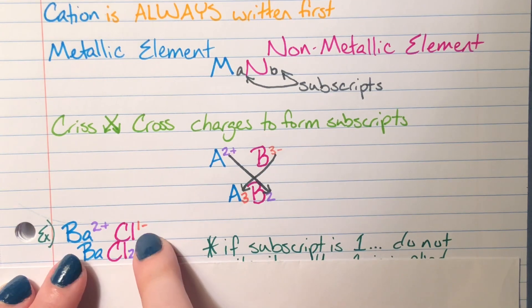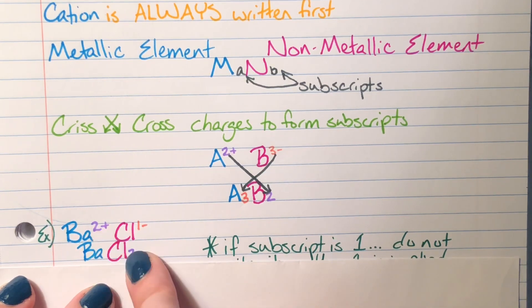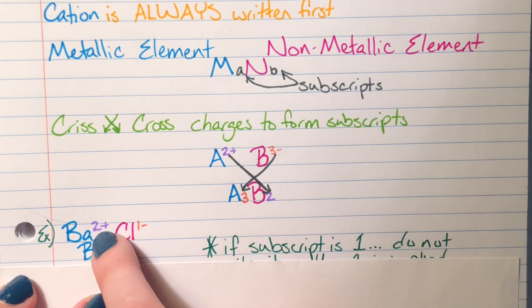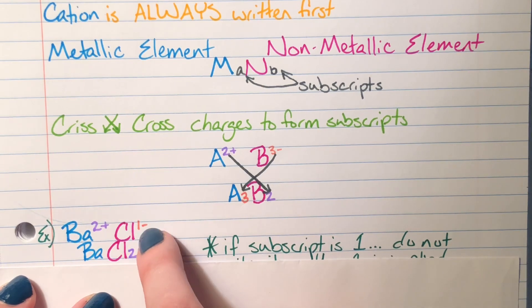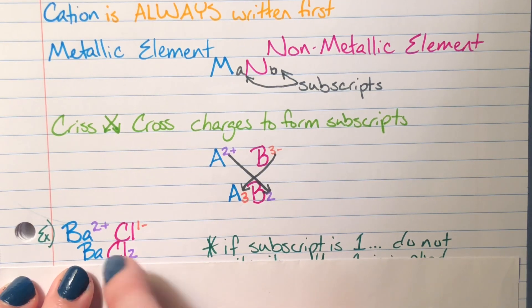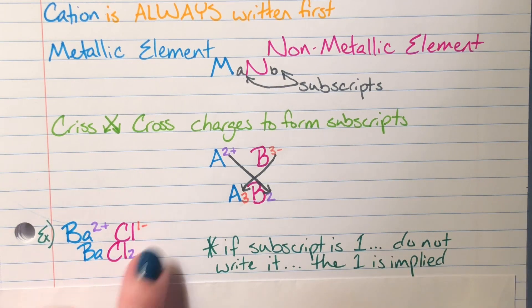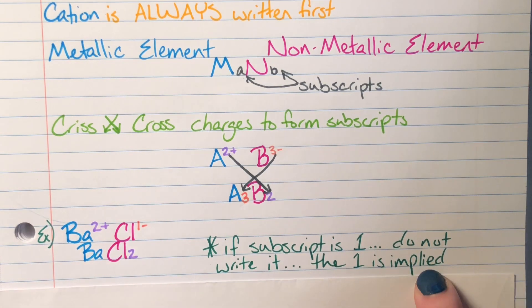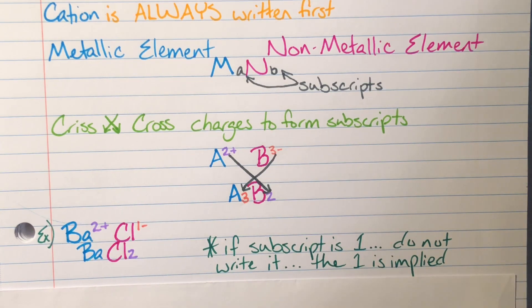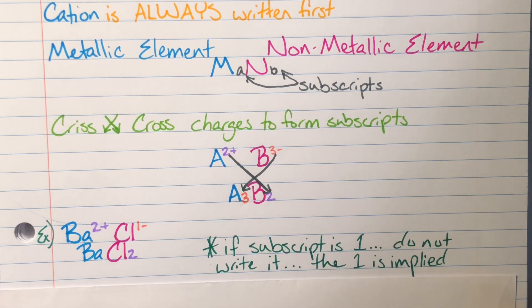I crisscross the charges for BaCl₂: barium gets a subscript of one (from chlorine's charge of 1) and chlorine gets a subscript of two (from barium's charge of 2). I don't write the subscript of one for barium because a subscript of one is always implied — if I didn't have any barium, I wouldn't have written it at all. So the formula is BaCl₂.